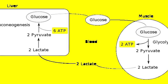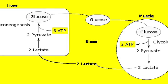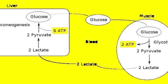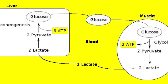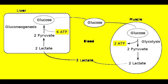As you can see, the lactate is transformed back into pyruvate by the same enzyme, lactate dehydrogenase, which in this case reduces NAD+ into NADH+H+, and transforms lactate into pyruvate, which is then transformed into glucose through gluconeogenesis.